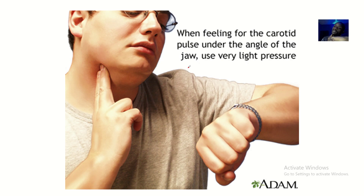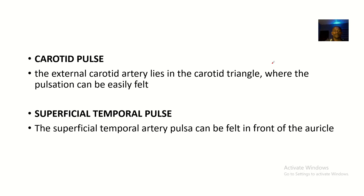This is how to take a carotid pulse — you look at a watch and put your hand on the neck. When feeling for the carotid pulse under the angle of the jaw, use very light pressure. The external carotid artery lies in the carotid triangle, where the pulse can be easily felt.